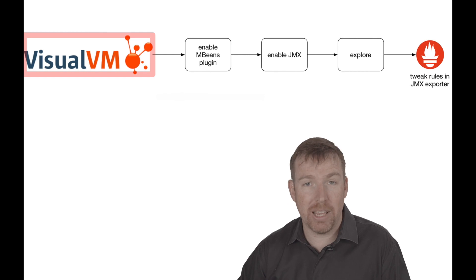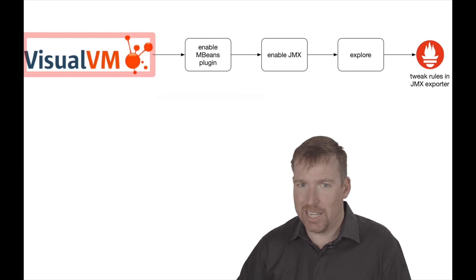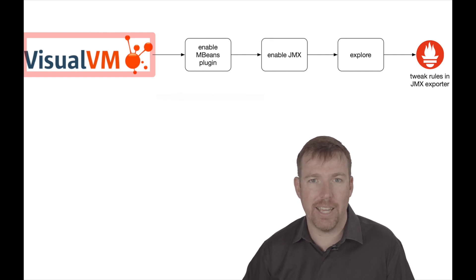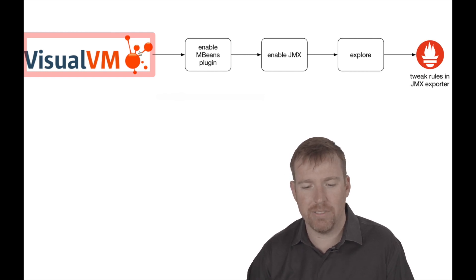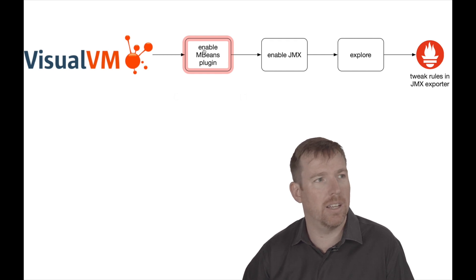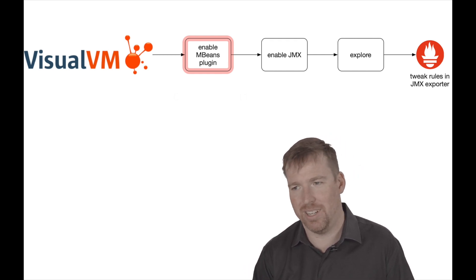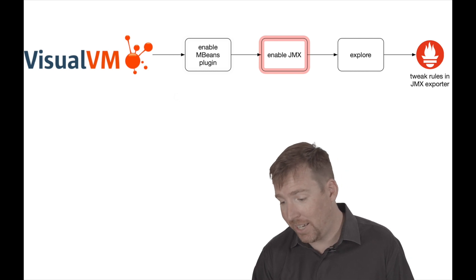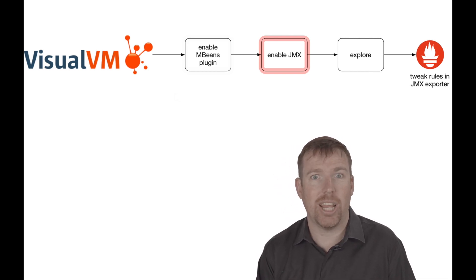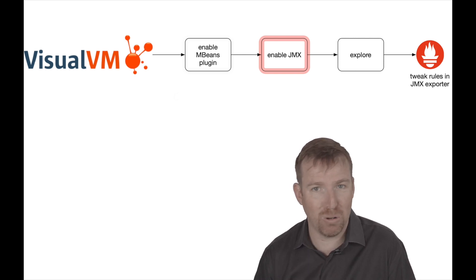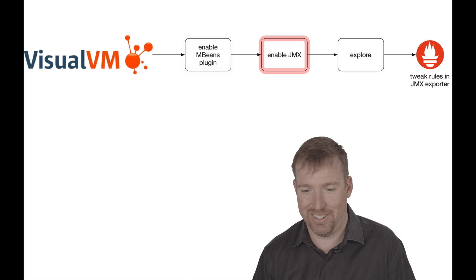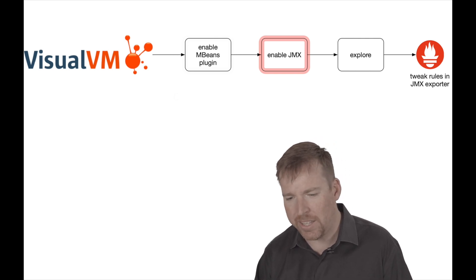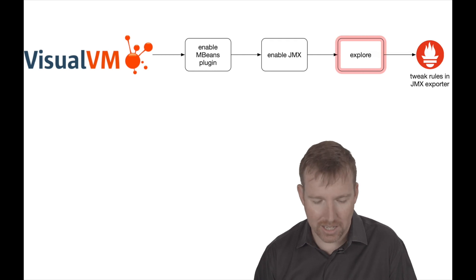If you're using the JMX exporter for some app, it's really useful to be able to see what metrics are available inside the app. To do that, I used a tool called VisualVM — it's free, you can just download it. You have to enable a plugin called the MBeans plugin; MBeans is like managed beans, and that's what has JMX metrics in it. Then you have to enable JMX, which in Kafka is as simple as setting the JMX_PORT environment property. If you give it a JMX port, it will be listening and allow things to connect to that port and see what's inside. Then you explore and write some rules to expose the metrics you want.